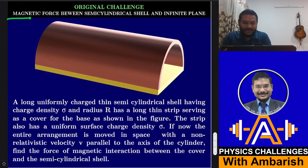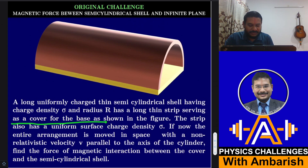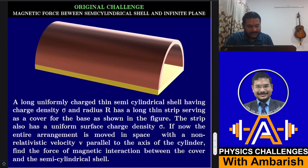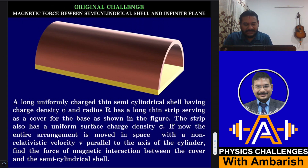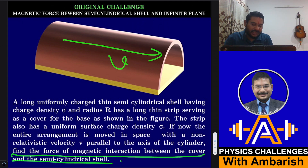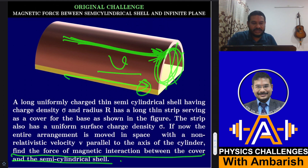So here's the challenge: Magnetic force between a semi-cylindrical shell and an infinite plane. A long uniformly charged thin semi-cylindrical shell having charge density sigma and radius capital R has a long strip serving as a cover for the base, as shown in the figure. The strip also has a uniform surface charge density sigma. If the entire arrangement is moved in space with a non-relativistic velocity V parallel to the axis of the cylinder, find the force of magnetic interaction between the cover and the semi-cylinder.